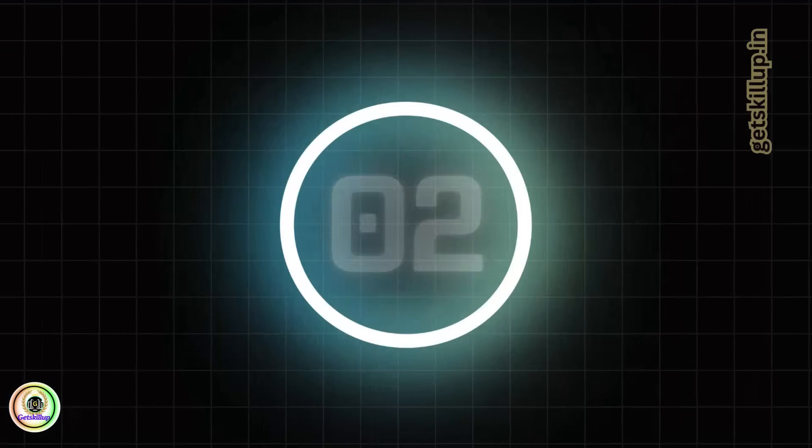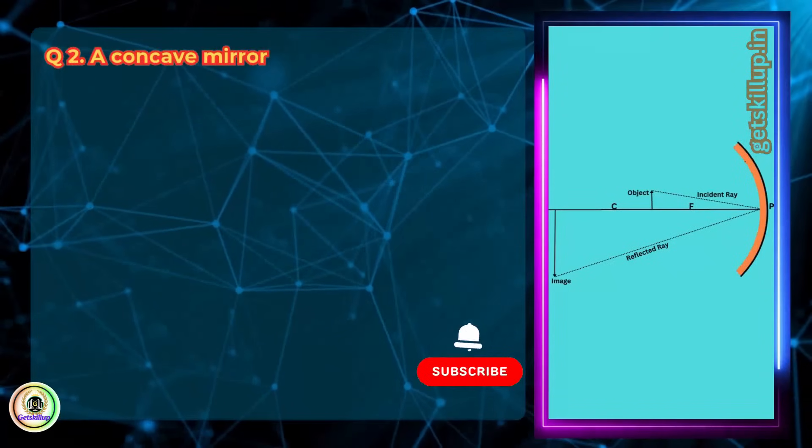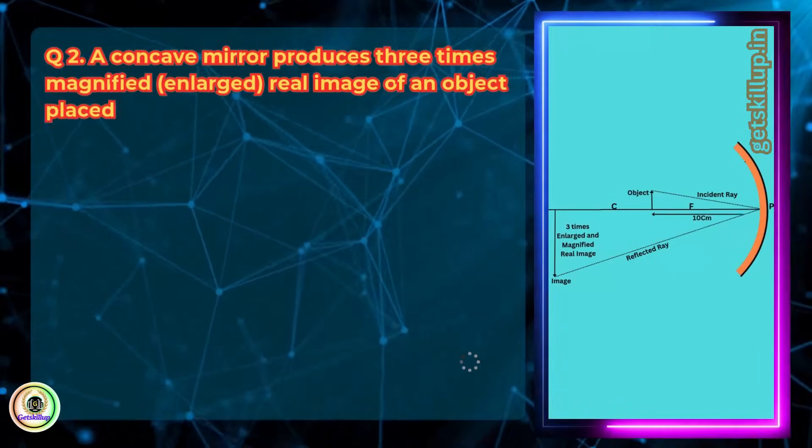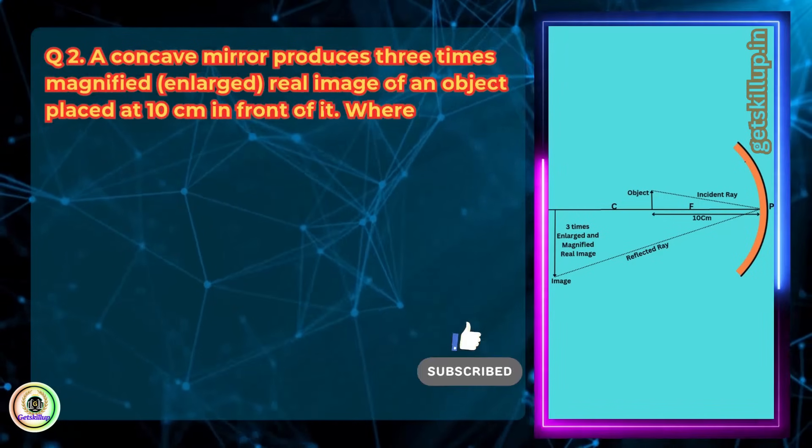Question 2. A concave mirror produced 3 times magnified, enlarged, real image of an object placed at 10 cm in front of it. Where is the image located?